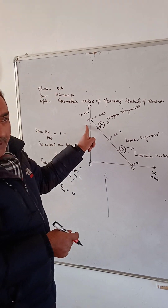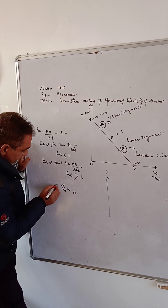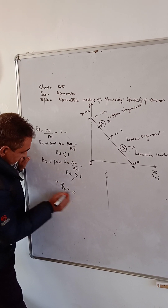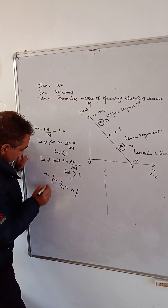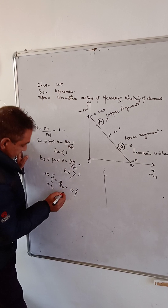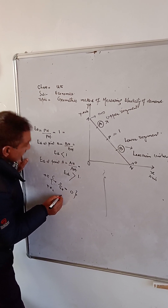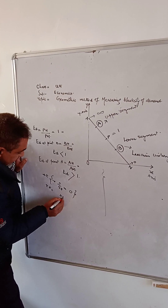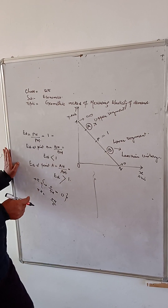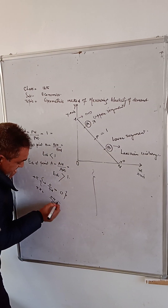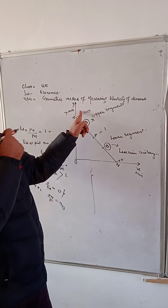Similarly, if we like to measure the elasticity of demand at point M, the result will be N-M divided by 0. When a real number is divided by 0, we tend towards infinity. And at this point, elasticity of demand will be infinity.